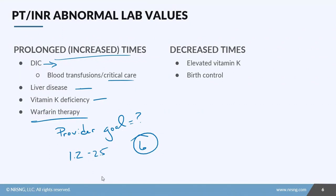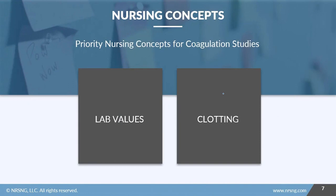A decreased PT and INR is not very common. If it does occur, the patient may have elevated or excessive vitamin K, or they may be on some form of birth control — which increases clotting risk and is why blood clots can happen with those medications.